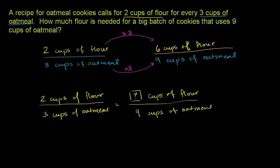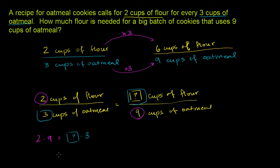I'll show you why they're really the same thing. In cross-multiplication, whenever you have a proportion set up like this, you multiply the diagonals. So you'll say that two times nine must be equal to the unknown times three — whatever the number of cups of flour is, times three. That gives us 18 equals the unknown times three. What times three equals 18? That is six — or you could divide both sides by three and get six.